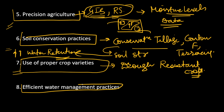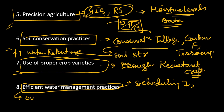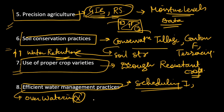Most importantly, we need efficient management of water practices. We need to properly schedule our irrigation and avoid over-watering. Surface irrigation and flood irrigation methods are highly unsustainable and lead to wastage of water. We need to schedule irrigation according to which phases of plant growth actually require it, minimize water wastage, and these things will help us in maximizing crop productivity.